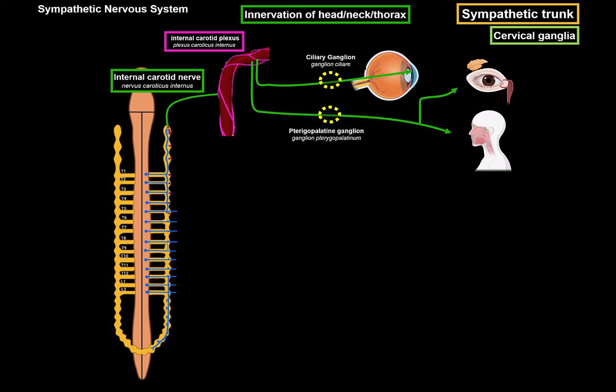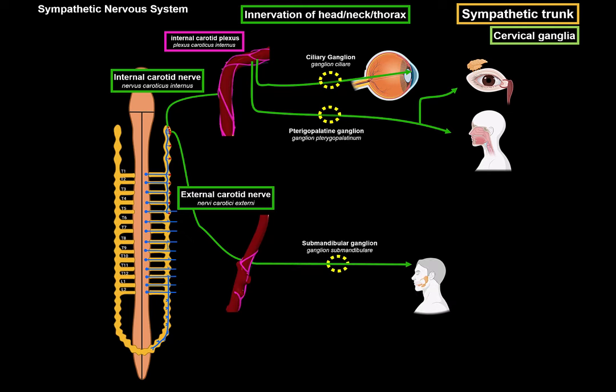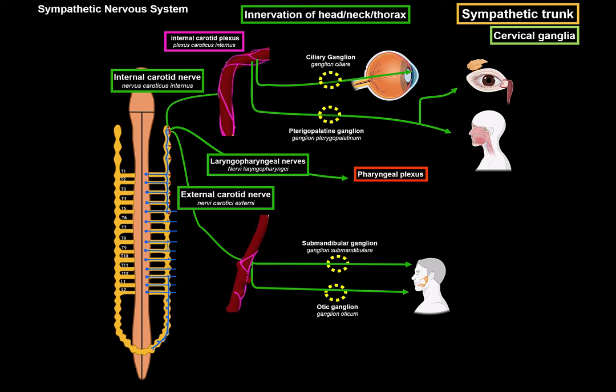Since we have an internal carotid nerve, we also have an external carotid nerve, which forms a plexus around the external carotid artery. From here, a sympathetic route goes toward the submandibular ganglion and another toward the otic ganglion, both providing sympathetic innervation primarily to the major salivary glands — the parotid, submandibular, and sublingual glands — decreasing mucus production. The superior cervical ganglion also gives off a laryngopharyngeal nerve, which joins pharyngeal branches from the glossopharyngeal and vagus nerve to form the pharyngeal plexus, providing motor, sensory, and sympathetic innervation to the pharyngeal area.